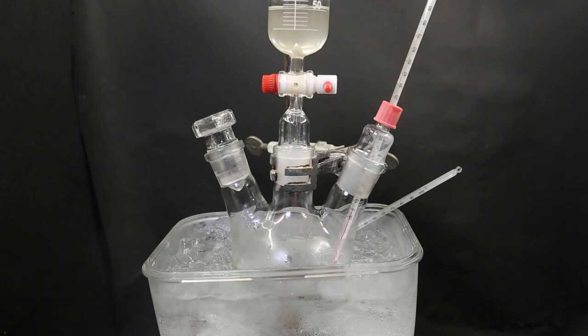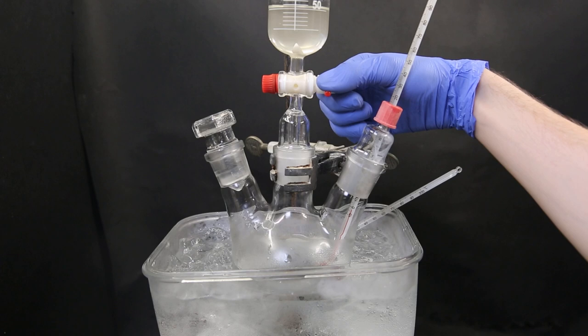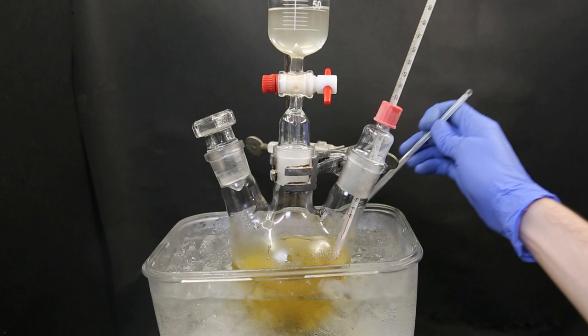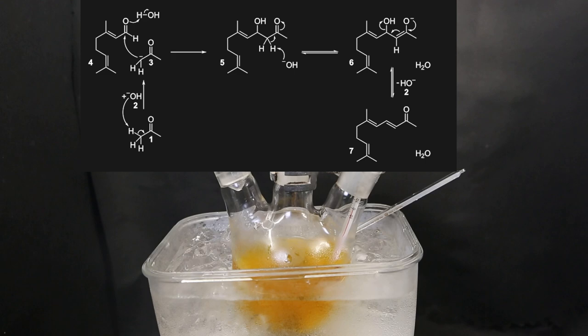When adding the sodium ethoxide, the solution quickly discolors. It is important to keep the temperature around minus 5C or below to reduce any side reactions or polymerization. What is happening is a base-catalyzed aldol condensation between citral and acetone, followed by dehydration of the aldol product into pseudo-ionone.